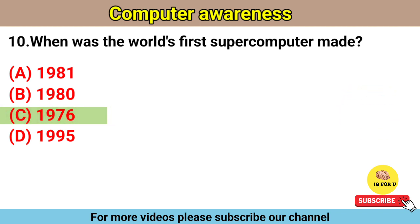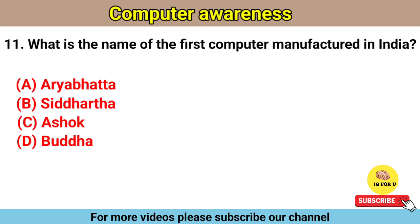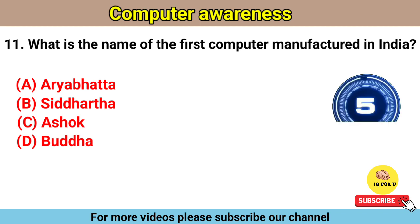The right answer is Option C: 1976. What is the name of the first computer manufacturer in India? Option A: Arya Bhatta, Option B: Siddhartha, Option C: Ashok, Option D: Buddha.